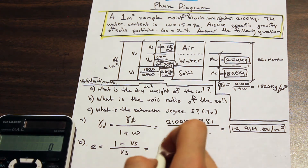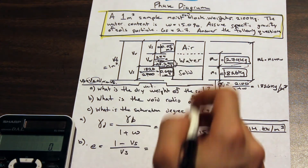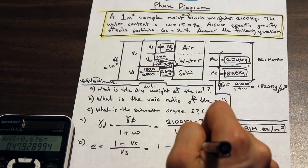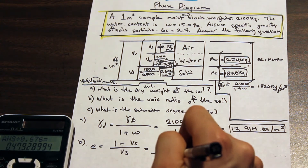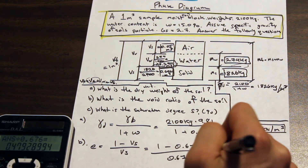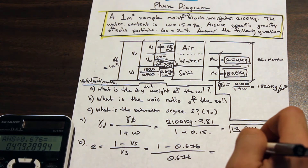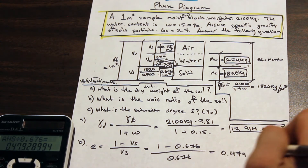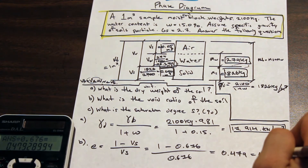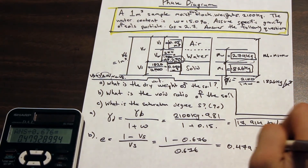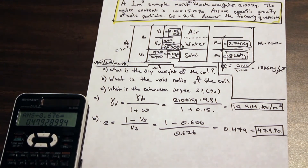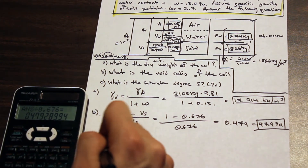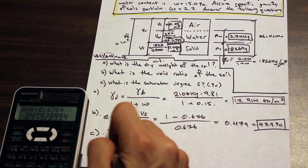Now we can plug into our void ratio formula: e = (1 minus 0.676) divided by 0.676, which gives us a void ratio of 0.479, or 47.9%. So there are 47.9% voids by volume in the soil sample.